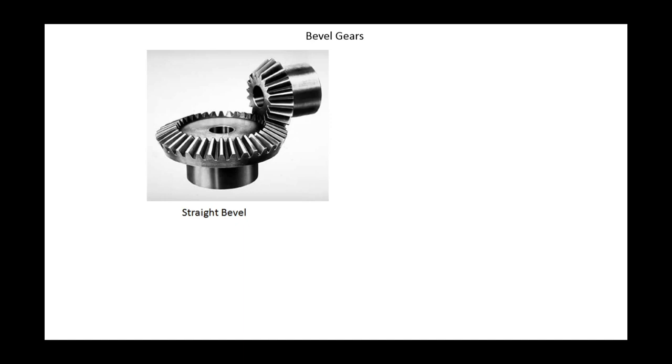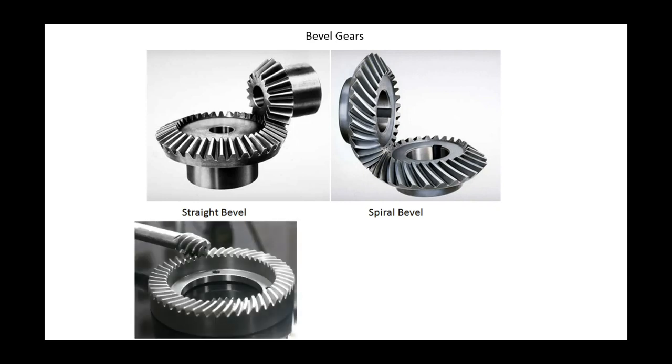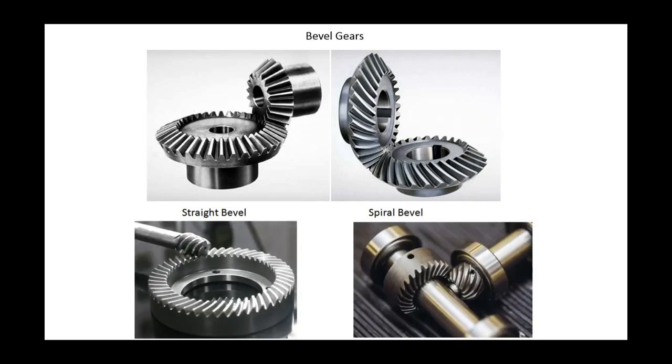The teeth can be straight or spiral like this. In this spiral bevel gear the teeth are not straight but helical. Another variation looks like this. These are called hypoid gears and found in car differentials. More about this later.